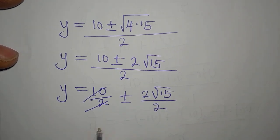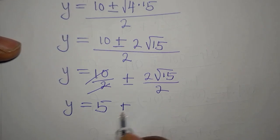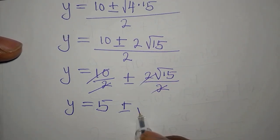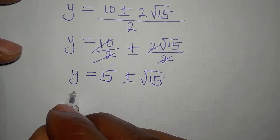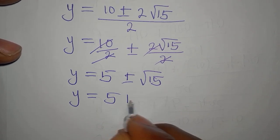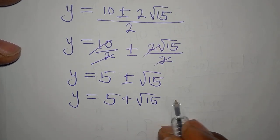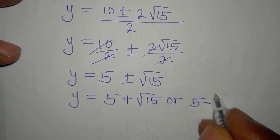So y now is 10 over 2 plus or minus 2 root 15 over 2. 2 will go here, so y is 5 plus or minus root 15. And this means that y is equal to 5 plus root 15 or 5 minus root of 15.